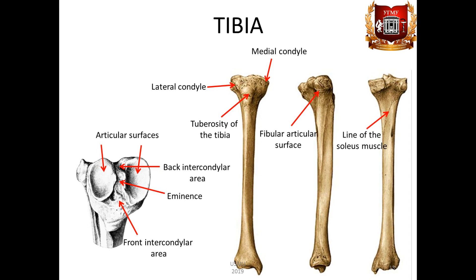The distal epiphysis of the tibia is expanded. On its lateral margin there is a fibular notch, incisura fibularis. There is a medial ankle, malleolus medialis, on the medial side. On its lateral side we can see the articular surface, which at an angle passes into the lower articular surface of the tibia. These surfaces, together with the articular surface of the fibula, articulate with the tarsus of the talus.